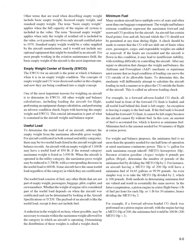After any repair or alteration that changes the weight and balance, the A&P mechanic or repairman must ensure that no legal condition of loading can move the CG outside its allowable limits. To determine this, the mechanic performs an adverse loading check—deliberately attempting to calculate aircraft loading in a manner that places the CG outside the limits. In a forward adverse loaded CG check, all useful load in front of the forward CG limit is loaded and all useful load behind this limit is left empty, except for fuel tanks located behind the forward CG limit, which cannot be left empty because the aircraft cannot fly without fuel.